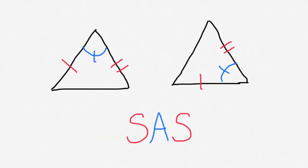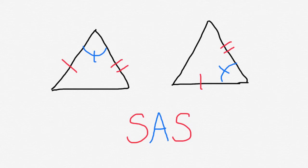Here is the Side-Angle-Side postulate. As you can see with the markings on the two triangles, you have a single dash which indicates those two sides are congruent. Then next to that, you have an angle in blue which are congruent on both, and then you have the two dashes that indicate those two sides are congruent. So the order is side, angle, side, which is important. It doesn't matter that the orientation of the second triangle is turned, as long as the dashes match. This is a Side-Angle-Side postulate.